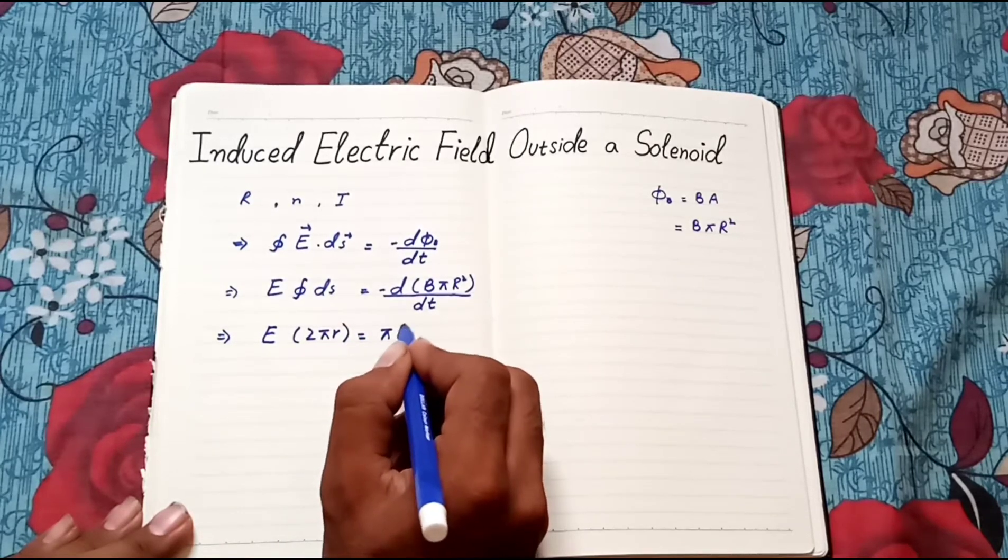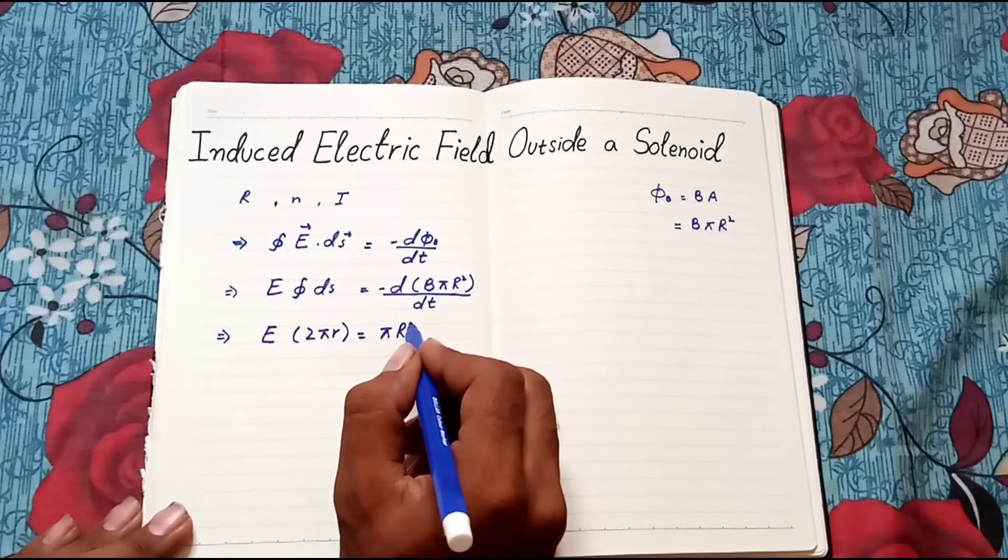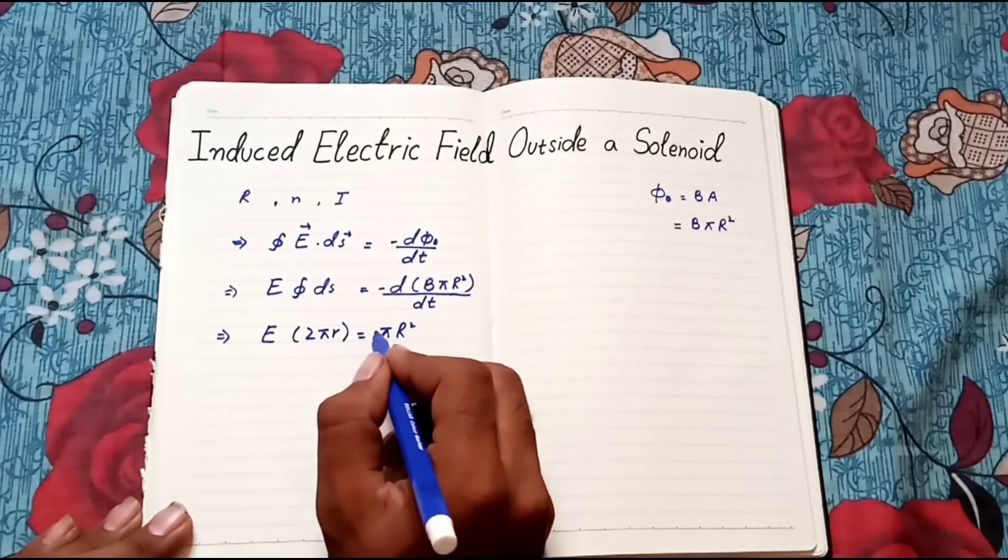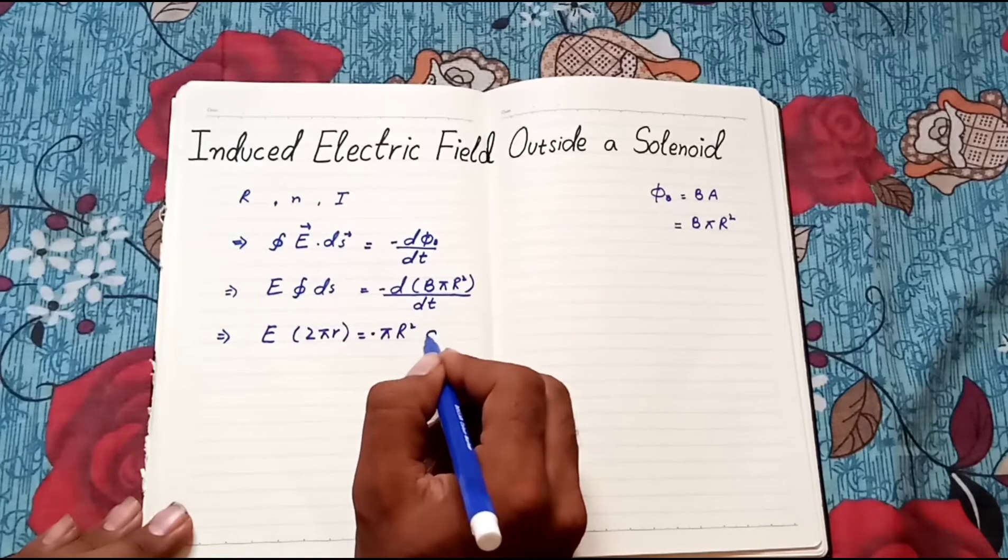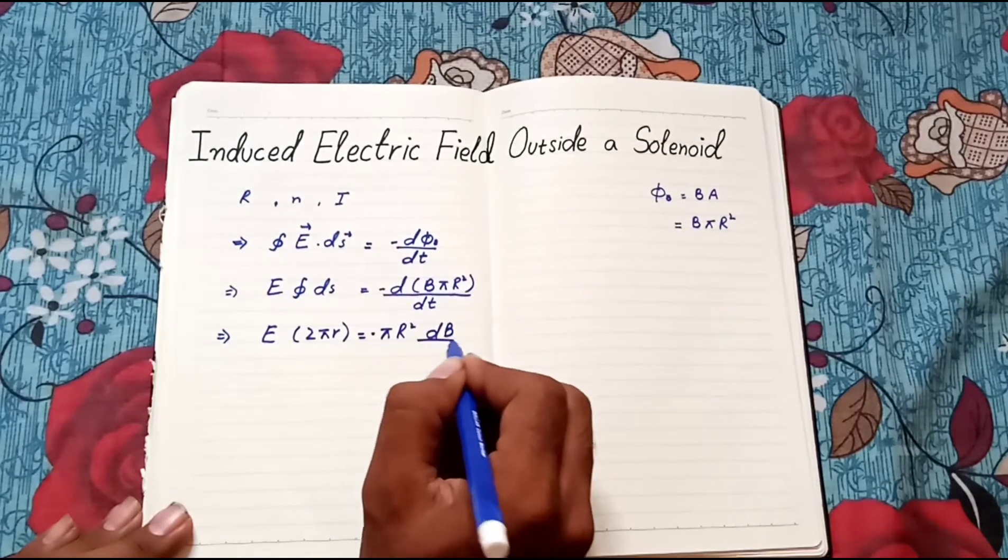Pi r squared, we take it out of derivative, equals db over dt.